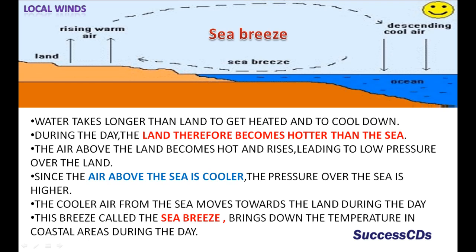Water takes longer than land to get heated and to cool down. During the day, the land becomes hotter than the sea. The air above the land becomes hot and rises, leading to low pressure over the land. Since the air above the sea is cooler, the pressure over the sea is higher. The cooler air from the sea moves towards the land during the day. This breeze, called the sea breeze, brings down the temperature in coastal areas during the day.